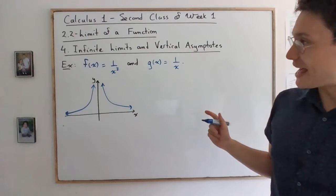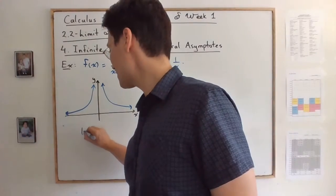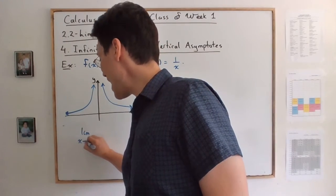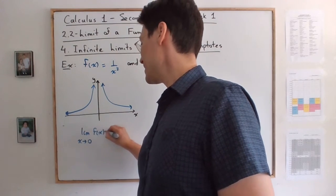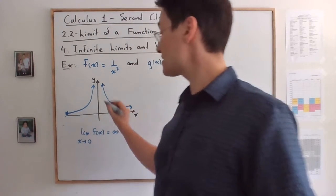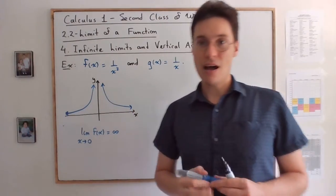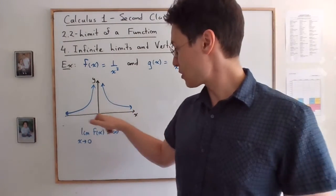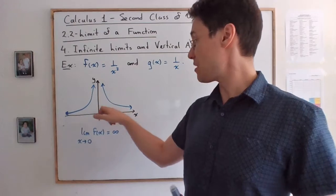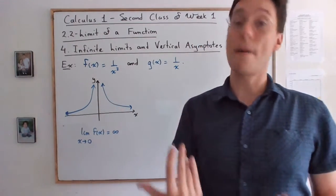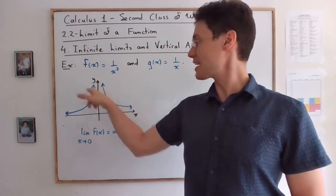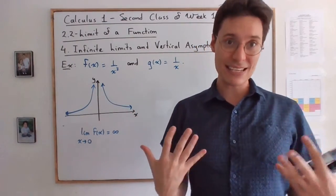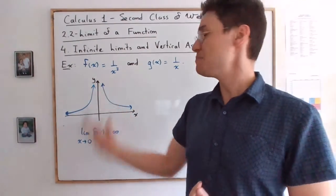And remember what we said is that the limit as x is approaching 0 of f(x) is infinity because in both sides, as x is approaching 0, either from above or from below, the function blows up. So in this case, even if the two one-sided limits do not exist, they at least agree in behavior.